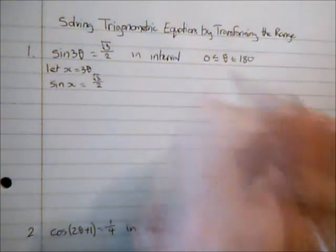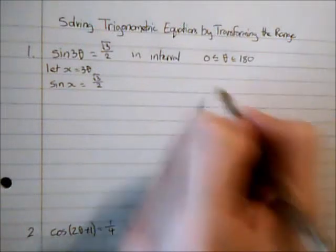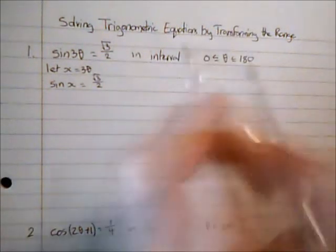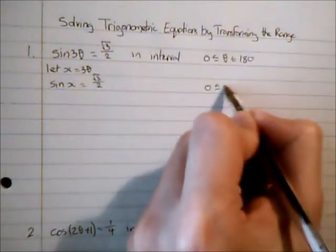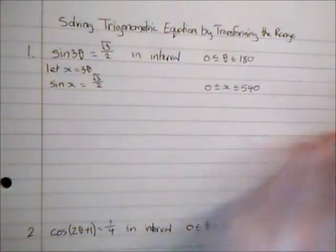I'm going to have to transfer this interval because this interval is in terms of theta and I want it in terms of x. So x is three theta, so I need to multiply all of this by three, giving me zero is less than or equal to x is less than or equal to 540.